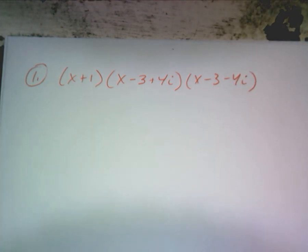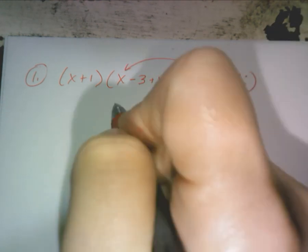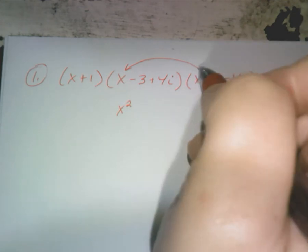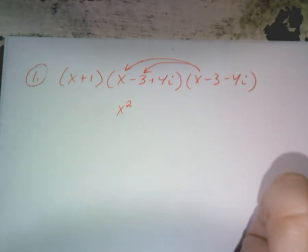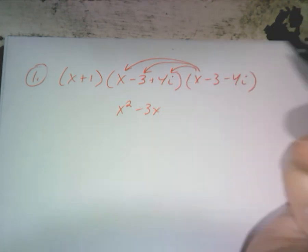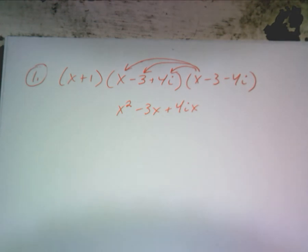Have you ever triple foiled, or do you remember it? Let me go over how to do that with you. X times X: X squared. It doesn't matter how you start. X times negative three: negative three X. X times four I: four IX. What did I tell you about all the I's though? What's going to happen to them? They're all going to go away. So if you do this right, all of your I's should go away.